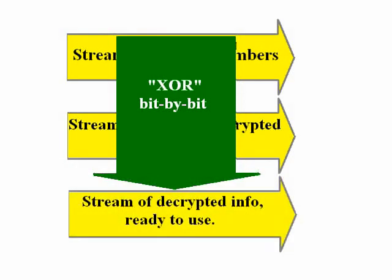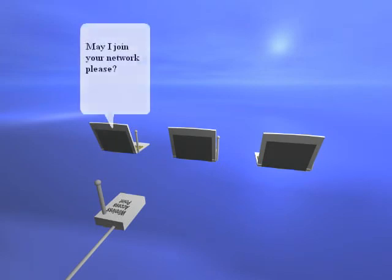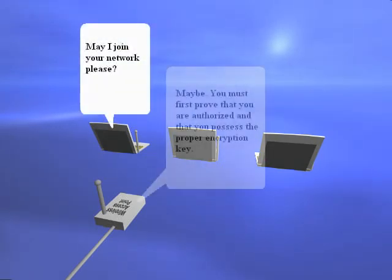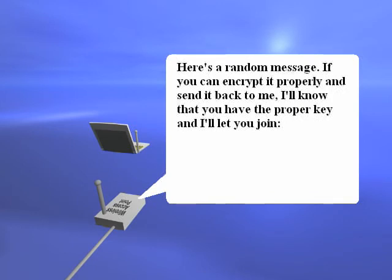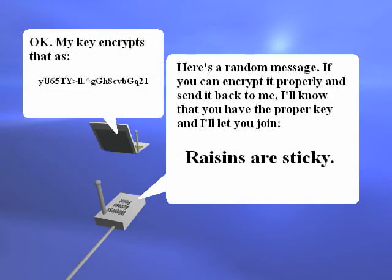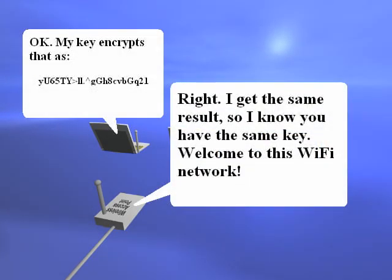It's a good idea, except it was used badly. In the initial implementation, an access point would authenticate someone who wanted to connect by sending them a made-up message of any sort. The endpoint that wanted to connect would use its key to encrypt that message — whatever it was, it could just be randomness — and send it back. The access point would then decrypt it and compare it with the message it sent.